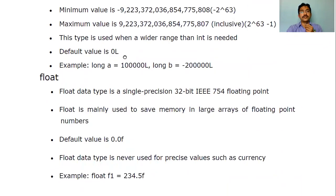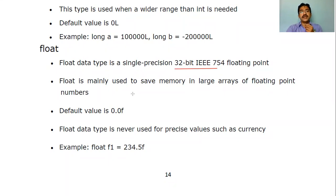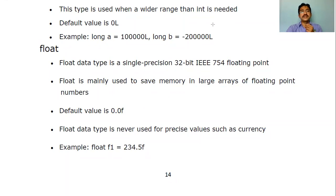The next data type is float — it consists of four bytes, which is 32-bit floating point with single precision. Single precision includes both the decimal and the fraction part. We mainly use float to save memory in larger arrays of floating point numbers. The default value for float is 0.0f.